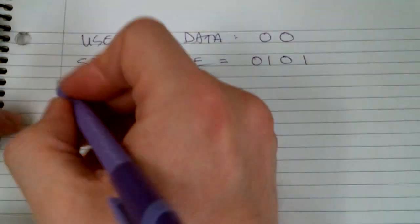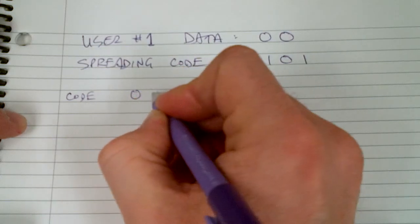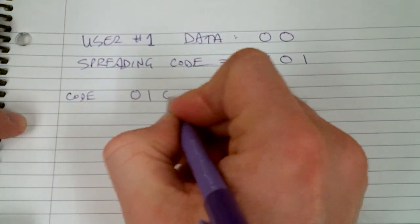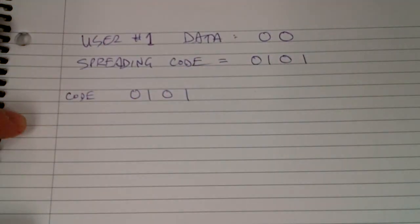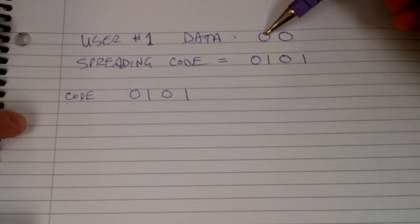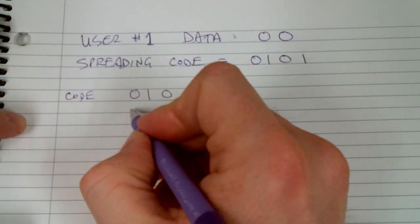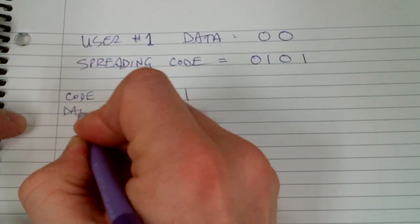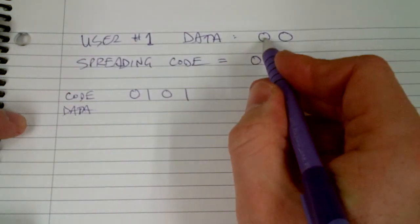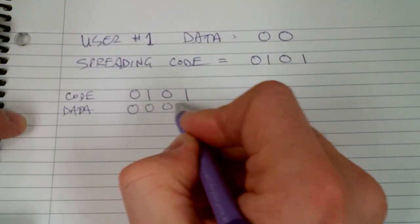So you start with the code and apply it to the first bit. The data for the first bit is a zero, so you just repeat it like that.